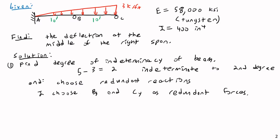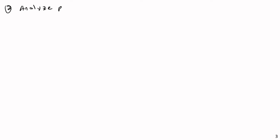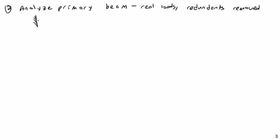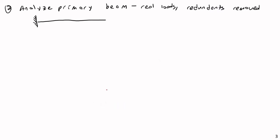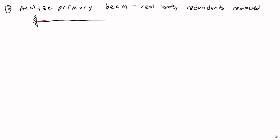Step two is to analyze the primary beam — the real beam with the redundant reactions removed but the real loads applied. If we remove B and C, we are left with a simple cantilever beam with a linearly increasing load across it, starting at zero and increasing up to three kips per foot, or 0.25 kips per inch. I'm going to do this entire problem in inches and kips.